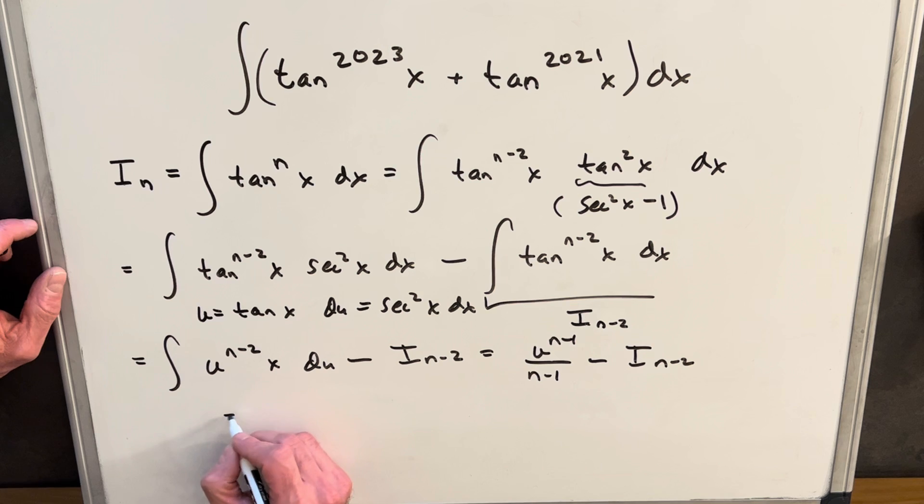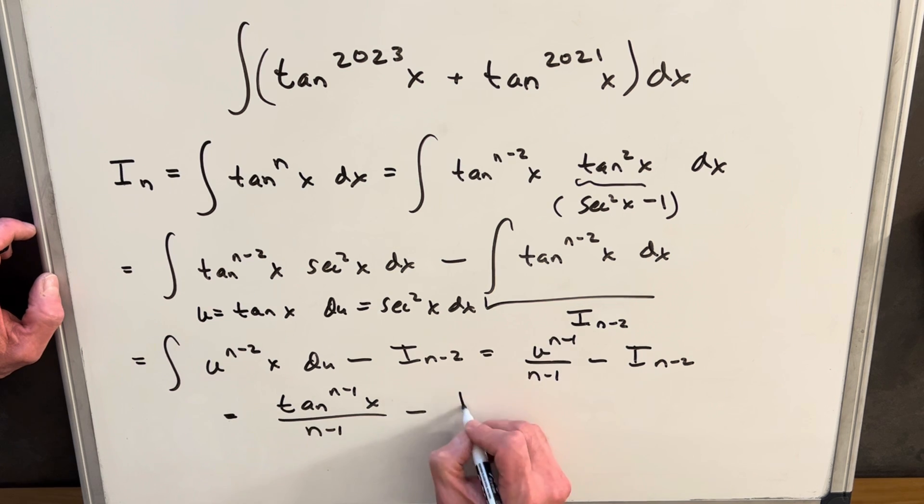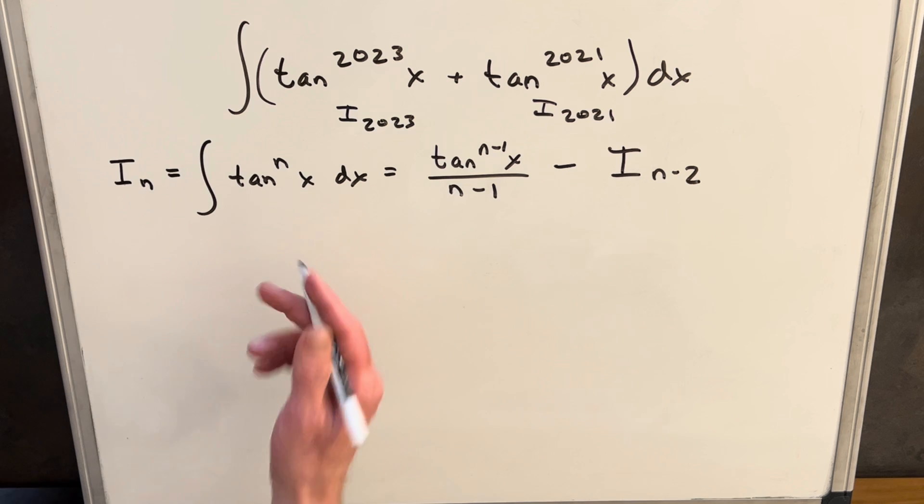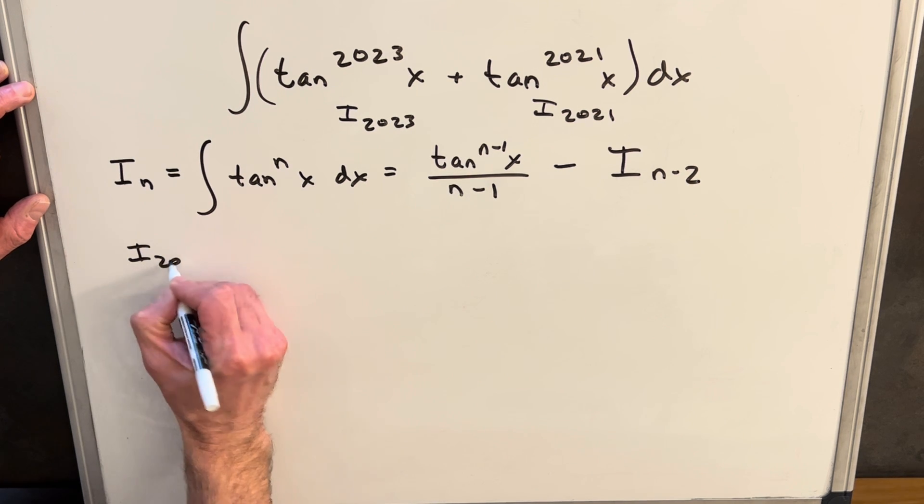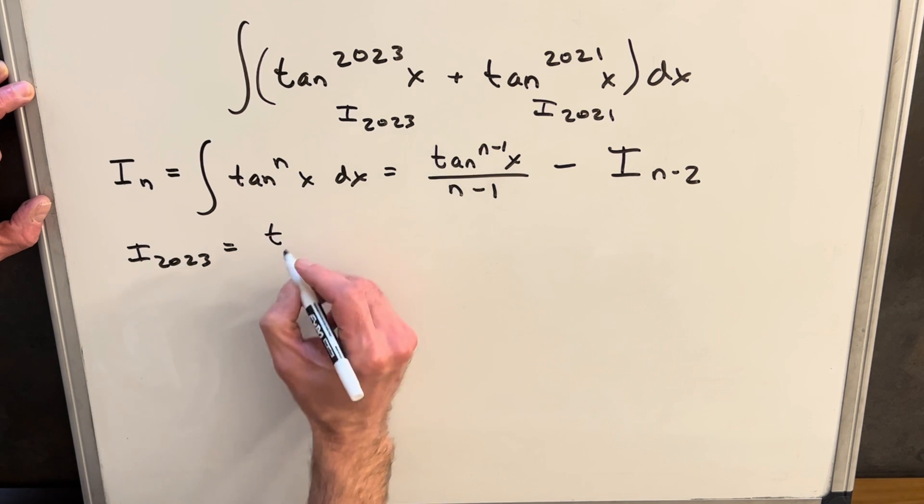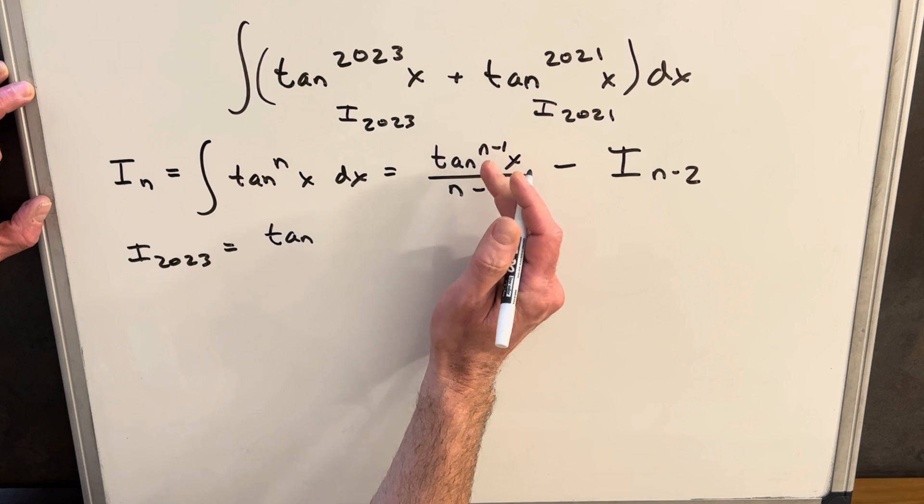So then back substituting for our u, which is tangent, we're going to have tan n minus 1x over n minus 1 minus i sub n minus 2. Then let's just look at our i sub 2023 and see what happens using this formula. So n is going to be 2023. So we'll use this.